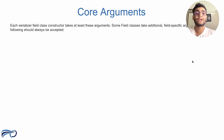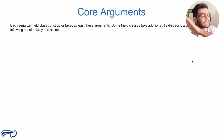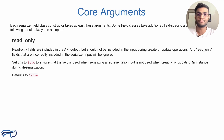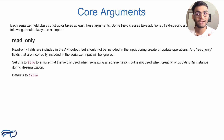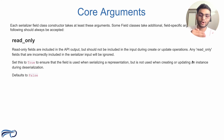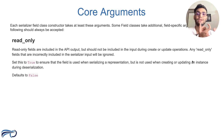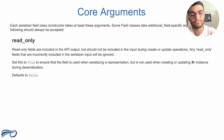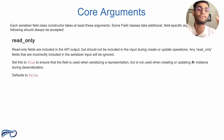Now let's understand what are the core arguments that Serializer provides. Each and every Serializer field will have these core arguments by default. The first one is the read-only field, which is set to false by default. Read-only fields are included in API output but should not be included in the input during create or update operations. So whenever we are creating or updating values inside the model, the read-only field is not included. It is included only while representing the output.